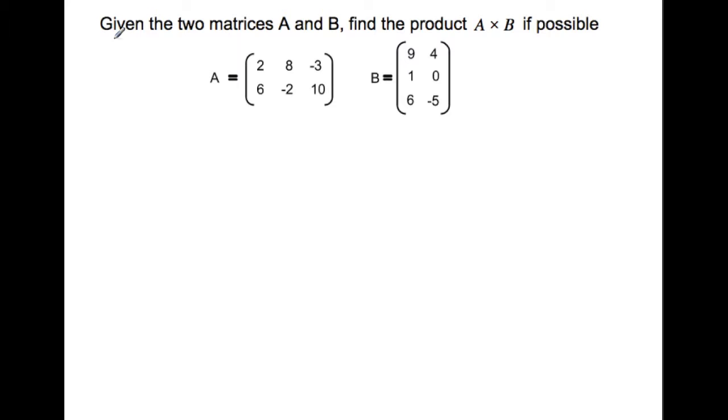This exercise is asking: given the two matrices A and B, find the product A times B if possible. We need to check the dimensions first. The dimensions of A are two rows by three columns, so it's 2 by 3. The dimensions of B are three rows and two columns.